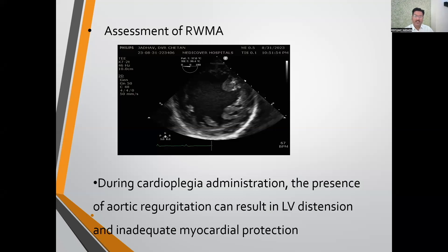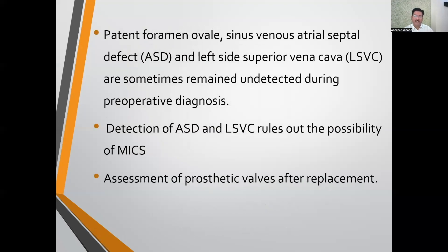TEE is helpful when going on bypass. After cannulation, we look for LV distension. During cardioplegia administration, the presence of aortic regurgitation can result in LV distension and inadequate myocardial protection — this must be monitored on TEE. Some findings can be missed on preoperative transthoracic echocardiography, like patent foramen ovale, sinus venosus ASD, and LSVC (left superior vena cava). Detection of ASD and LSVC rules out the possibility of MICS, so we must always look for these on intraoperative TEE.